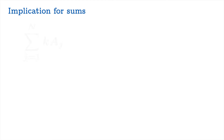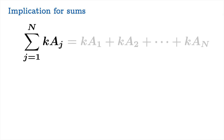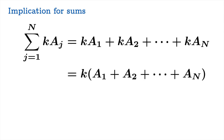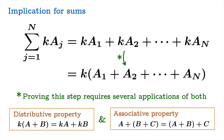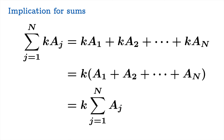Now, what does this mean for general sums? Suppose you take a bunch of numbers aⱼ and multiply them all by a common factor k. If you write that out in sigma notation, we know we can factor out the k from this sum. This might seem obvious, but proving it rigorously using only the distributive and associative properties requires several careful applications working with two or three sum ends at a time. In any case, we can take that common factor right out of the sum.